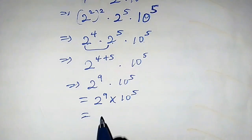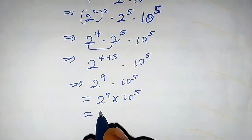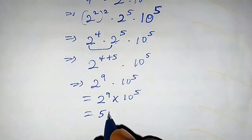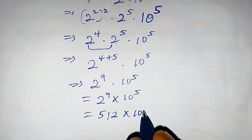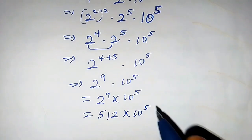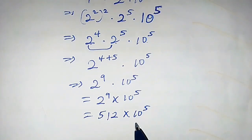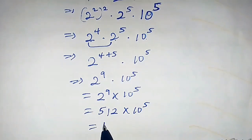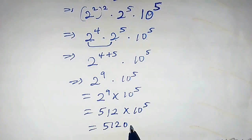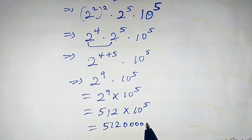So the result is 2 raised to power 9 times 10 raised to power 5. 2 raised to power 9 is simply 512, so we have 512 times 10 raised to power 5. You can leave the answer in this form, or write it out as 51,200,000.